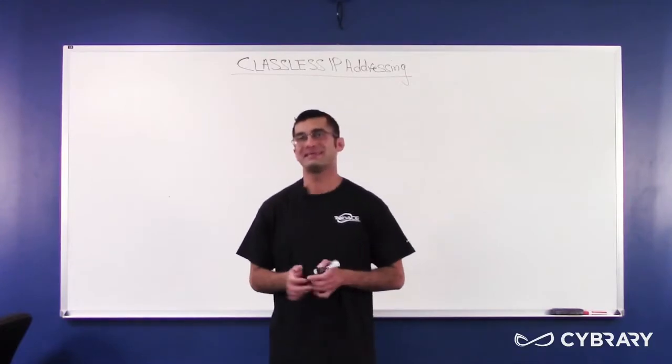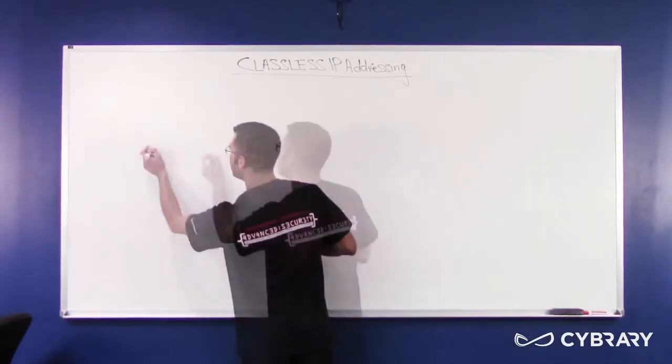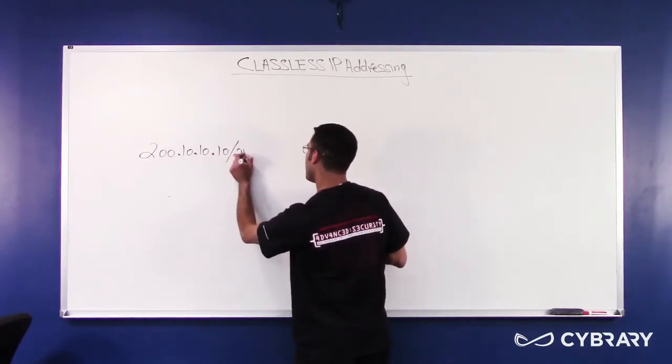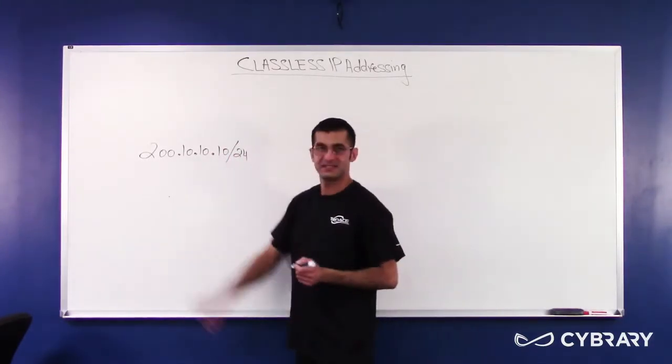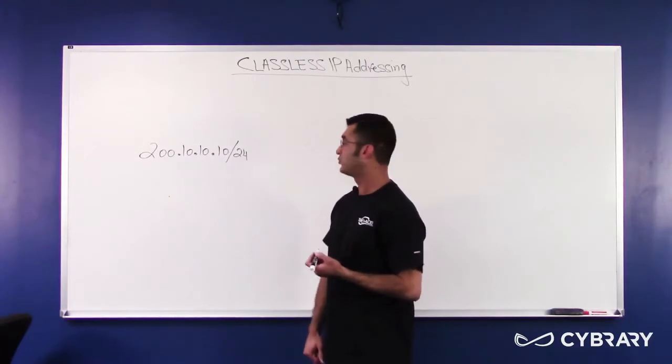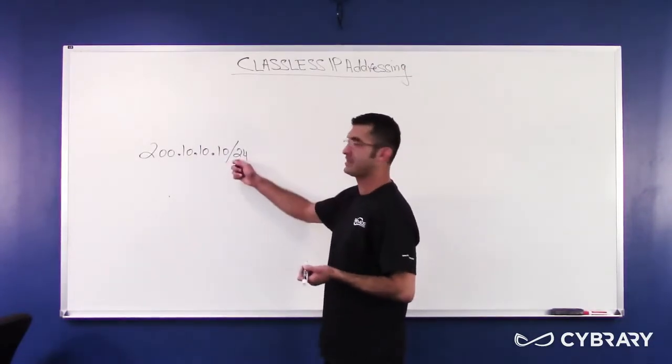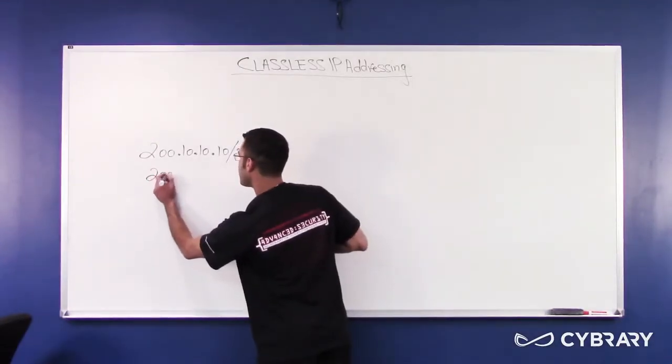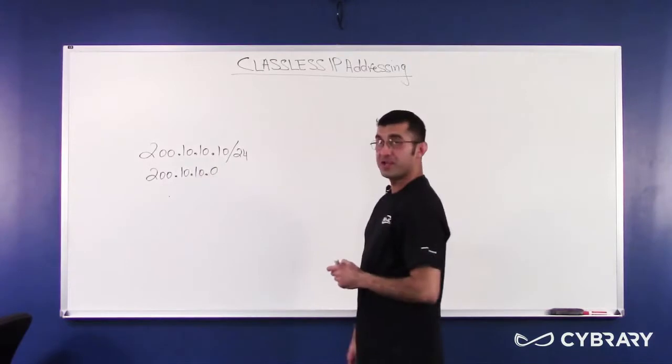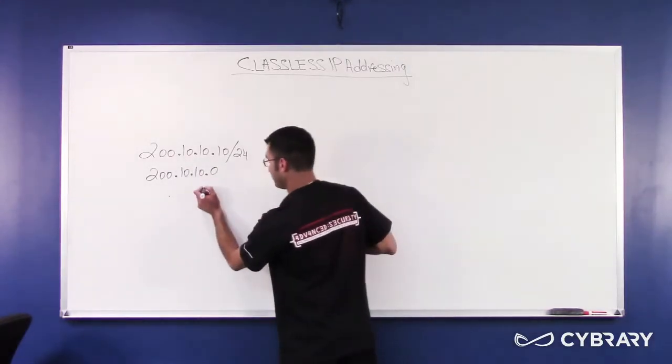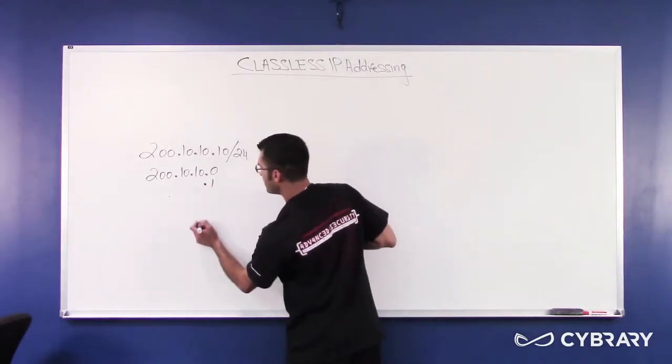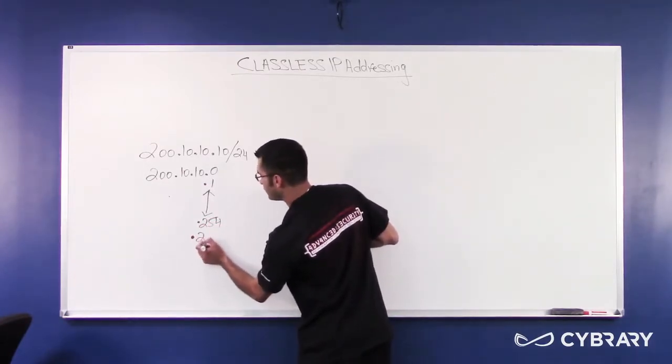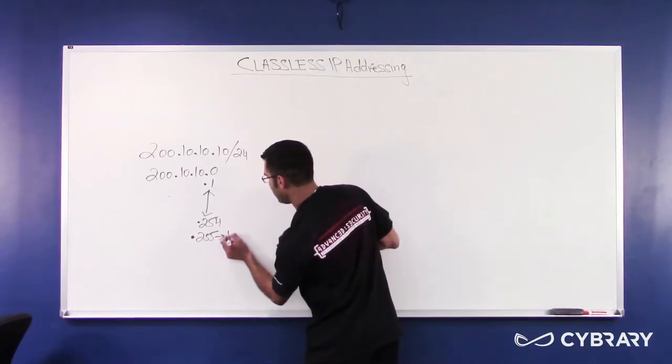If you pick a class C address, 200.10.10.10 slash 24, since this is a class C address, or the mask being 255.255.255.0, all represented as slash 24, the network address is 210.10.0. The range of addresses that can be derived from this is .1 through .254, .255 being a broadcast.